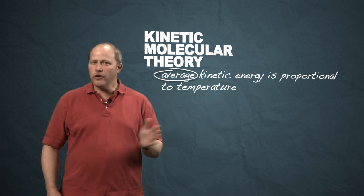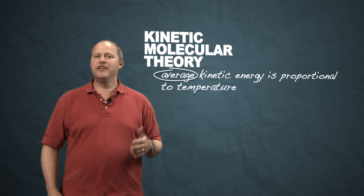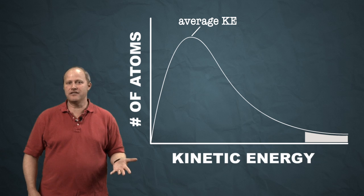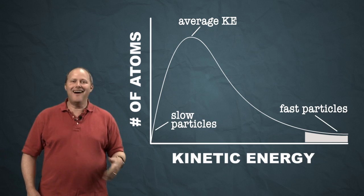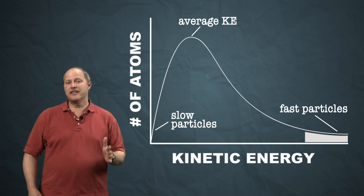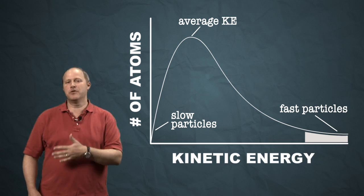That's because all of the particles in the sample actually don't have the same kinetic energy. There's a distribution of energies. Some of the particles are moving very fast, some of the particles are moving slow. On average, we know what their velocity is because that's what's related to the temperature.